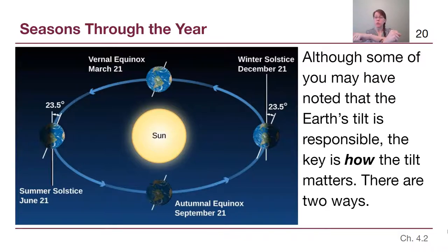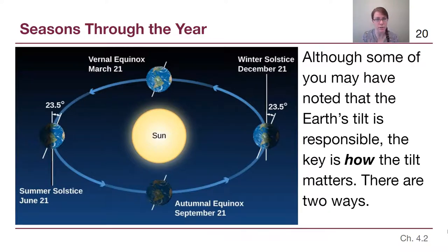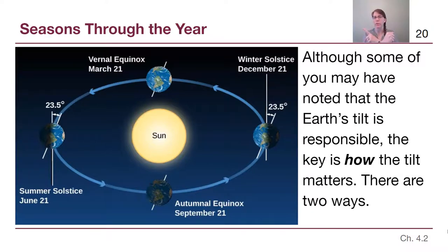At the winter solstice — December 21st, always right around that time — we're pointed away from the sun. We've tilted the northern hemisphere away, not drastically affecting the distance. There's a 93 million mile distance between us; tilting slightly away is not going to make a big change. But what it will affect is where the sun actually moves through our sky, and that's what we're going to explore in this video.